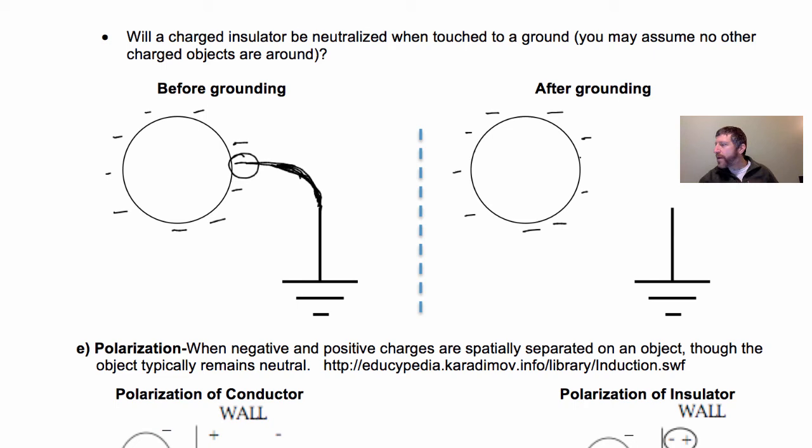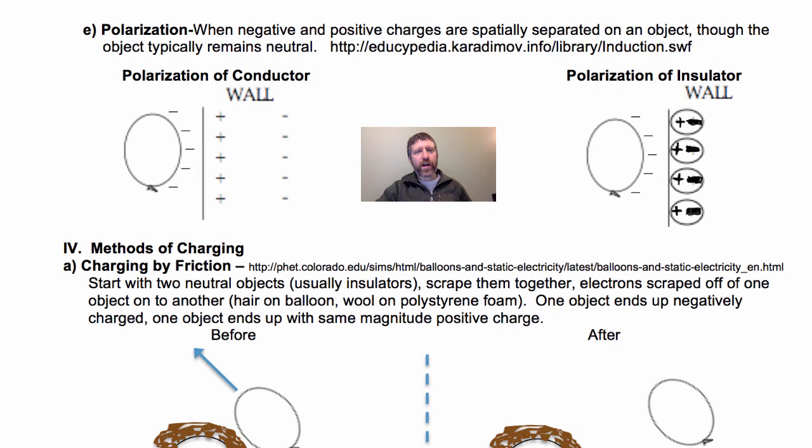Let's now talk about the important concept of polarization. Polarization is when negative and positive charges are spatially separated on an object, though the object typically remains neutral. So here's an example of a polarized conductor. You see I've brought this negative balloon close to a wall that's a conducting wall, and the electrons are like, get me away from these electrons on that balloon. They actually move over to the right like so. They actually, the electrons move this way and end up over where they are at the right there. They physically leave the atoms, which they were previously hanging around.